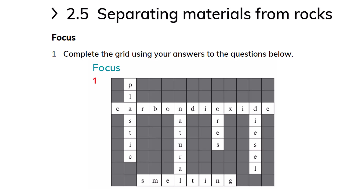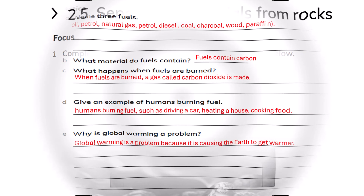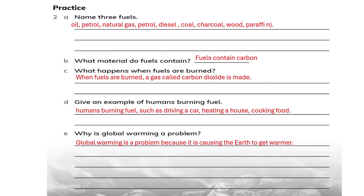Separating materials from rocks. Name three fuels: oil, petrol, and natural gas. Fuels contain carbon. When fuels are burned, a gas called carbon dioxide is made. Examples of humans burning fuel include driving a car, heating a house, or cooking food. Global warming is a problem because it causes the Earth to get warmer.